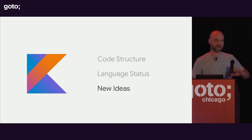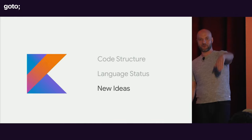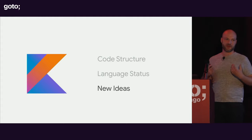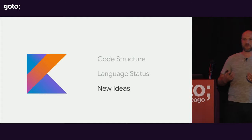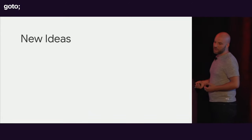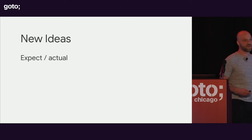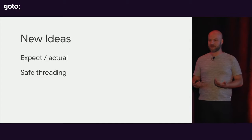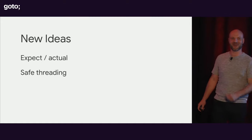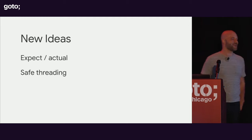So far I've talked about the code and the language status. Now let's dive all the way into the code section and look at the new ideas you're going to have to embrace to be a successful Kotlin Multiplatform developer. There are basically two things that are new in Kotlin Multiplatform: there's this concept of expect and actual, and there's this concept of safe threading.